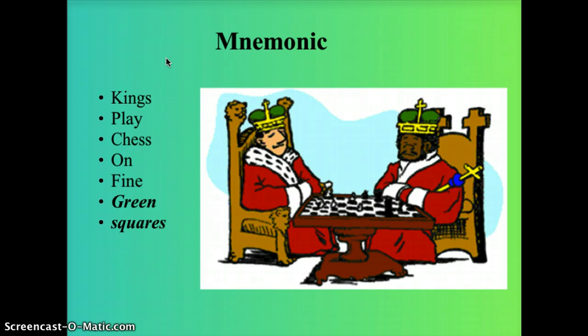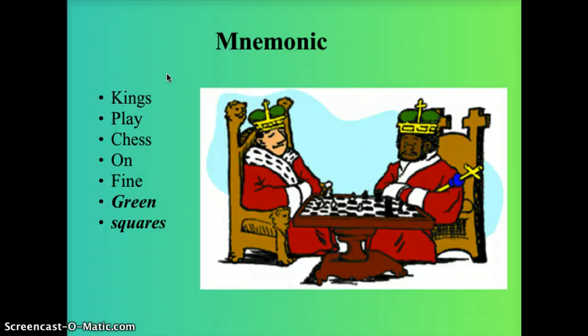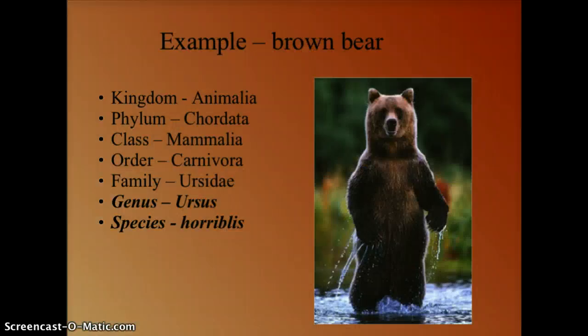To remember that order, we use a mnemonic device: 'Kings Play Chess On Fine Green Squares.' Kings = Kingdom, Play = Phylum, Chess = Class, On = Order, Fine = Family, Green = Genus, Squares = Species. Kingdom, Phylum, Class, Order, Family, Genus, Species.